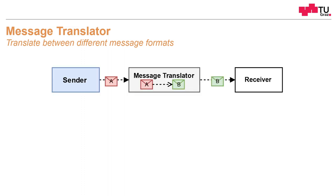Again, we have our sender, and the sender is sending a message in message format A. But on the receiver side, our receiver expects messages in format B and doesn't understand message format A. That's why we have our message translator here in between, and what the message translator does is simply take the information content of message A and convert it to message B.